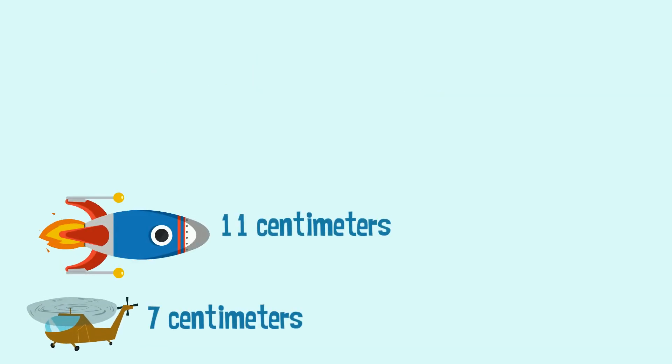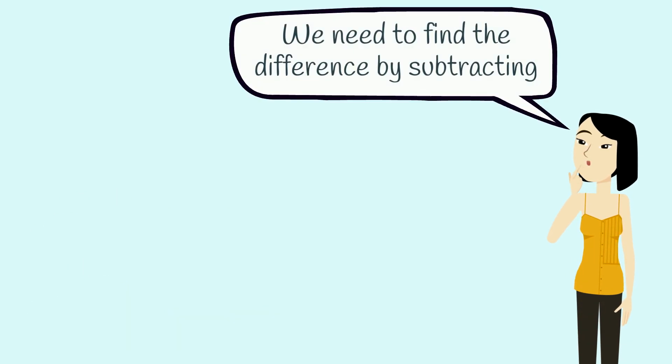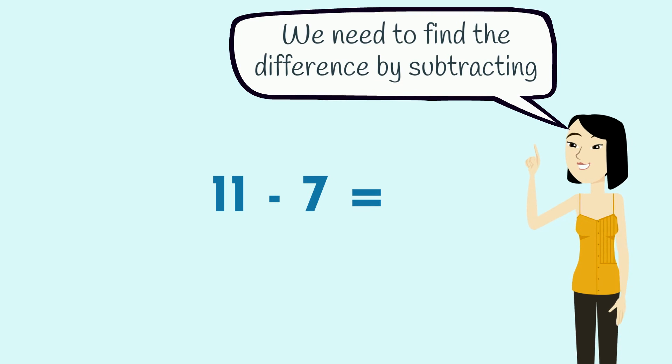What do we need to do now? You are correct. We need to find the difference by subtracting. So what is 11 take away seven? That's right, four.